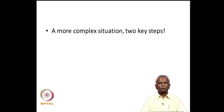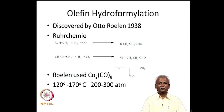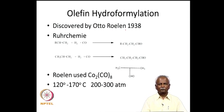Now we will consider a more complex situation with two key steps: the hydroformylation reaction. The previous reaction was primarily developed by Monsanto, and now we are talking about another chemical company called Ruhrchemie, which developed the hydroformylation reaction. The person primarily responsible for this discovery was Otto Roelen, who did this as early as 1938 — long before the renaissance of organometallic chemistry and the discovery of ferrocene in 1956. This reaction converts alkenes in the presence of hydrogen and carbon monoxide into useful aldehydes.